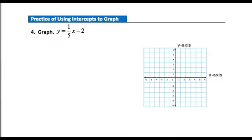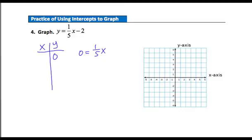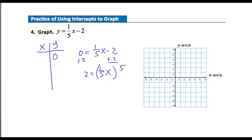Pause your video player and work question 4. The equation is y equals 1/5 x minus 2. Make a t-table. The x-intercept occurs when y is 0, giving 0 equals 1/5 x minus 2. Adding 2 to both sides gives 2 equals 1/5 x. Multiplying both sides by 5 — the reciprocal of 1/5 — the 5's divide out on the right side, leaving x equals 10. So my first point is (10, 0).